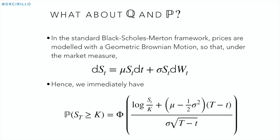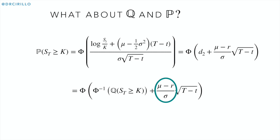Given our assumption of geometric Brownian motion for the price process, it is very simple to compute the probability of being in the money according to the physical measure P. Notice that the argument of the CDF of the standard normal can be expressed in terms of our D2 quantity. It is equal to D2 plus (mu minus r) over sigma, times the square root of (T − t).